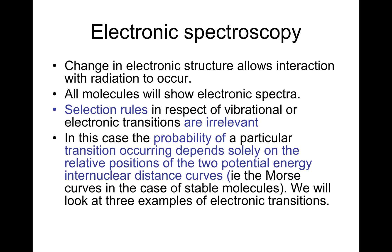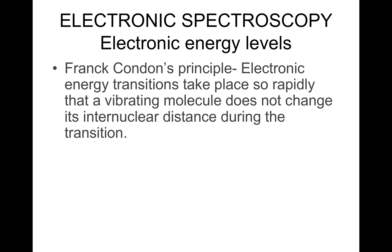The probability of a particular transition occurring depends solely on the relative positions of the two potential energy versus internuclear distance curves, i.e., the Morse curves. For stable molecules we will look at three examples of electronic transitions. The Franck-Condon principle states that electronic energy transitions take place so rapidly that a vibrating molecule does not change its internuclear distance during the transition.